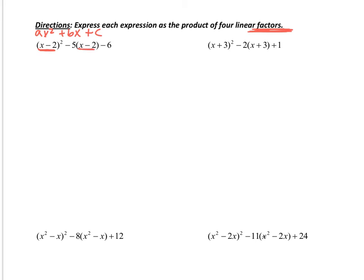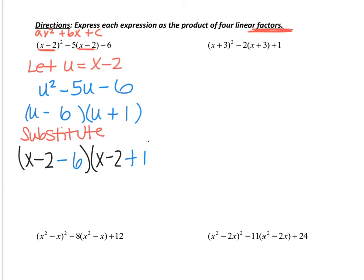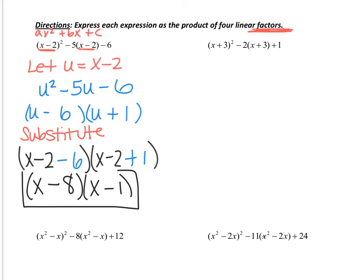Whatever part is repeated is what you let u equal. So let u equal x minus 2. Everywhere you see x minus 2, put u, giving you u squared minus 5u minus 6. Factor that as u minus 6 times u plus 1. Now substitute back in: u equals x minus 2, so you get x minus 2 minus 6 and x minus 2 plus 1. Simplifying: negative 2 minus 6 is negative 8, and negative 2 plus 1 is negative 1. That's your final answer.